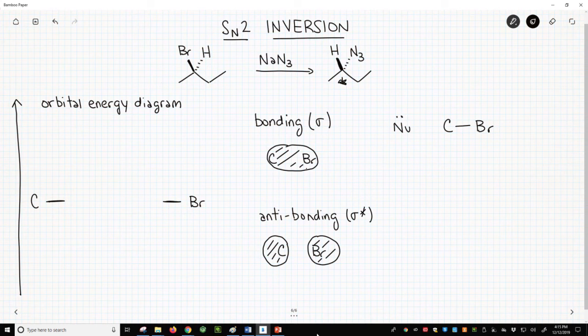To understand, we need to think about molecular orbitals. On the bottom left is an orbital energy diagram. This can match almost any orbital, but for us it represents the carbon-bromine bond. Carbon on the left has an atomic orbital with one electron. The bromine AO on the right has one electron.